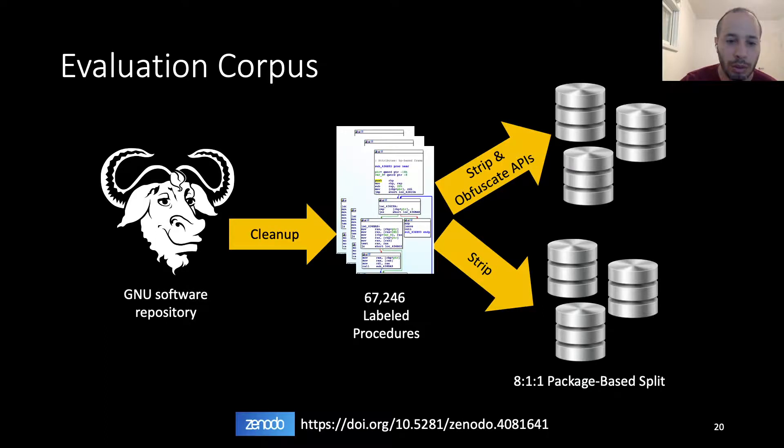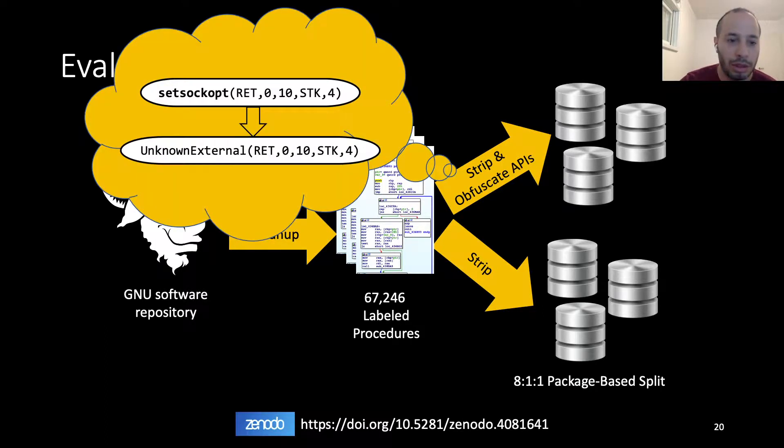One more thing we wanted to do is obfuscate the API names. This essentially causes the call sites to lose the name of the called API, and it was important for us to understand how important are they to the representation and making sure that our presentation could work without them. This dataset is also available online.